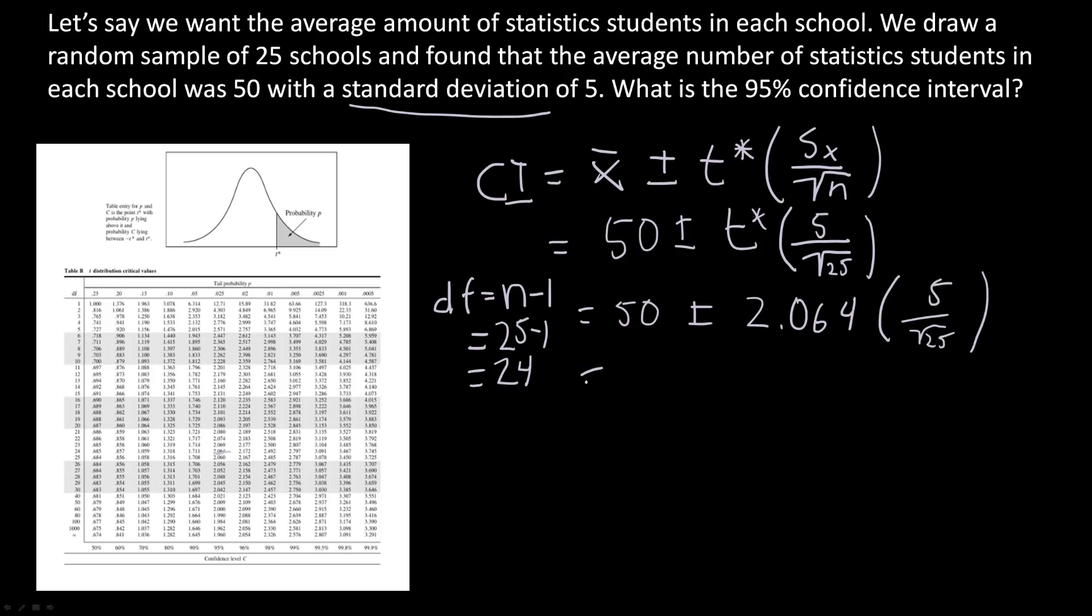Now for this, if you want to simplify, it's going to be 50 plus or minus 2.064 over 1. So the confidence interval here is going to be 50 plus or minus 2.064. So if you want to simplify that down, it's going to be equal to 47.936, 52.064.